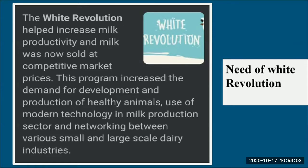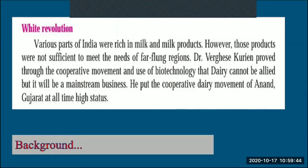The White Revolution promoted use of modern technology in the milk production sector and networking between various small and large-scale dairy industries. Various parts of India were rich in milk and milk products, however those products were not sufficient to meet the needs of far-flung regions. Dr. Varghese Kurian proved through the cooperative movement and use of biotechnology that dairy would not be an allied but a mainstream business.